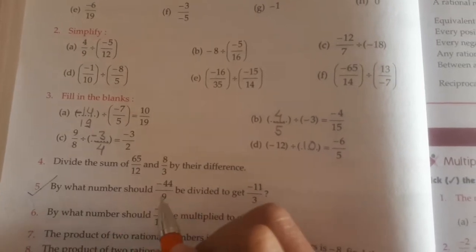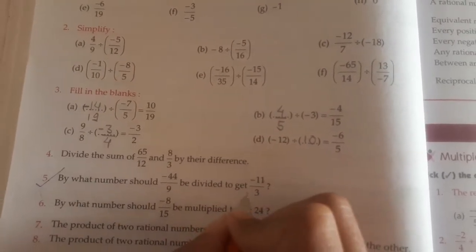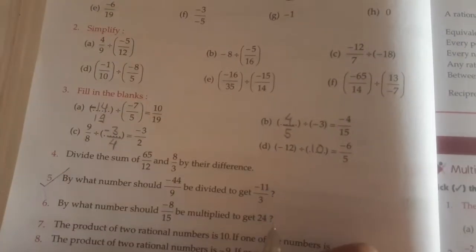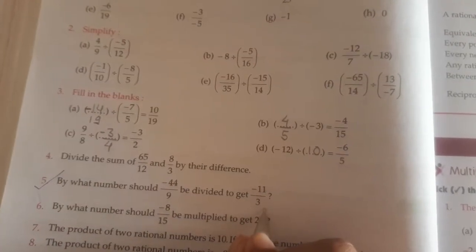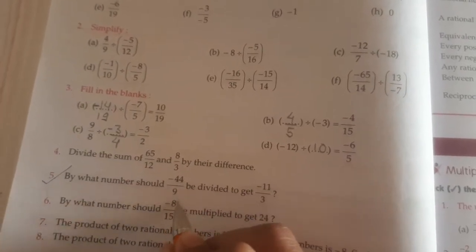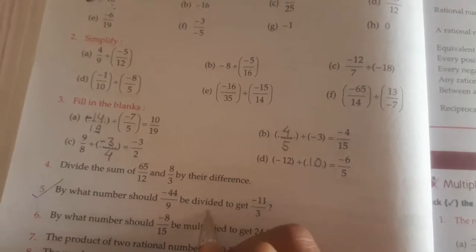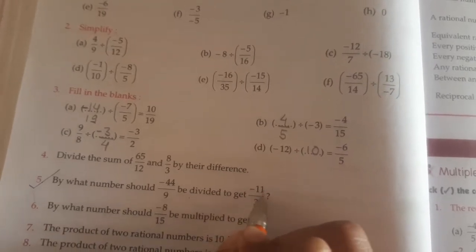By what number should -44/9 be divided to get -11/3? By what number should -44/9 be divided? Suppose that number is x. We divide by x to get -11/3.